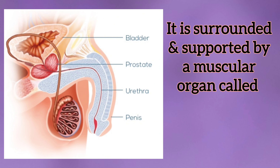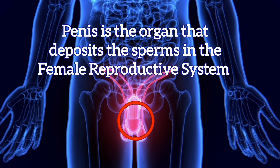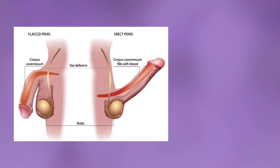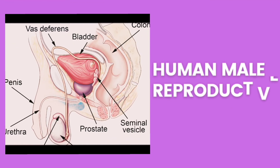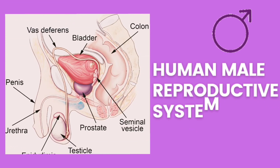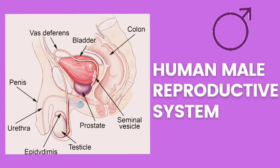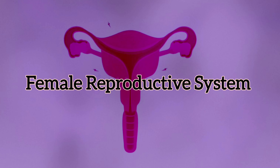The urethra is surrounded and supported by a muscular organ called the penis. The penis is the organ that deposits the sperm into the female reproductive system; it becomes hard and erect during the time of mating. That's all about the human male reproductive system in brief. In the next video we will see the structure and functioning of the human female reproductive system.